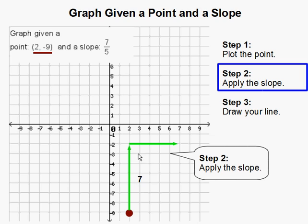Then from that end point, we're going to apply our run, which is 5. I'm going to go over to the right 5 times. 1, 2, 3, 4, 5. And from this end point, that is where our second point is going to be.